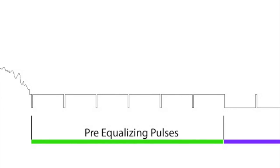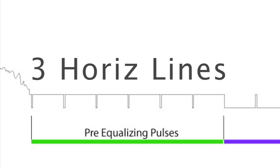To mark the beginning of every field, there are six pre-equalizer pulses composed of half-width negative pulses but at twice the frequency of horizontal sync. The six pre-equalizing pulses occupy the space of three horizontal lines.